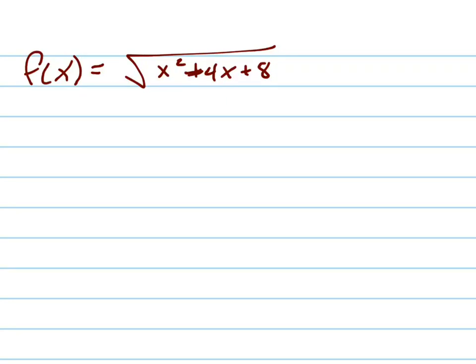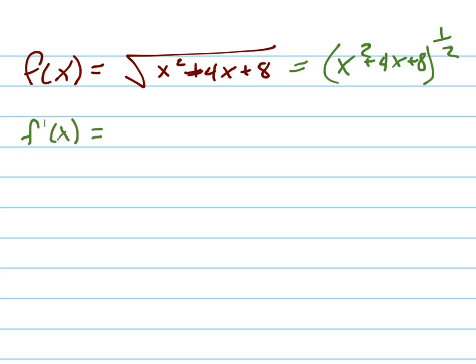We want to take the derivative of this function, so we're going to have to use the chain rule. Remember that the square root is the same as the one-half power. Whenever you have a function inside a function, you first take the derivative of the outside function and leave the inside unchanged.